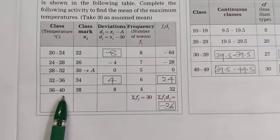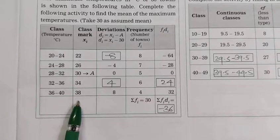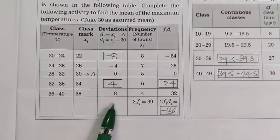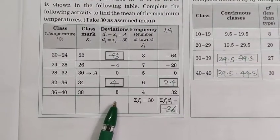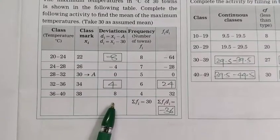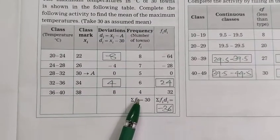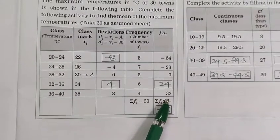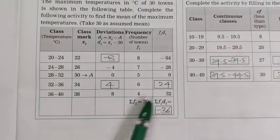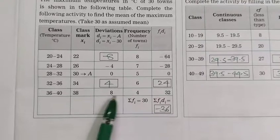Here given is that we get 36 to 40, class marks 38, and here 8 deviations, and frequency 4. So here we get fi di equal to 32, product of 8 and 4.